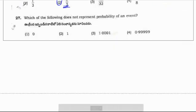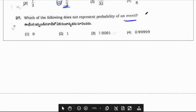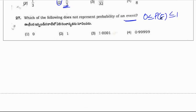Which of the following does not represent a probability of an event? The probability of any event always lies between 0 and 1, including 0 and 1. So 0 is a probability, 1 is a probability, 0.9999 is less than 1 so it's a probability. But 1.0001 is greater than 1, so the correct option is option 3, as 1.0001 is not a probability.